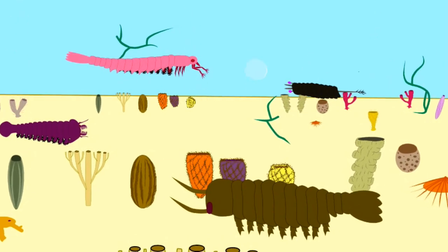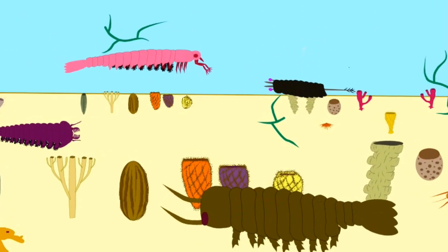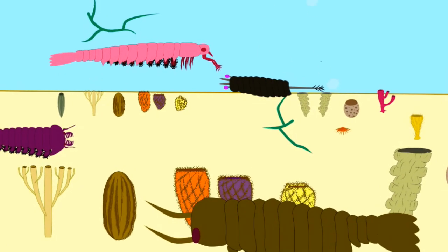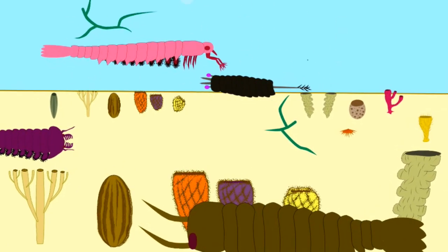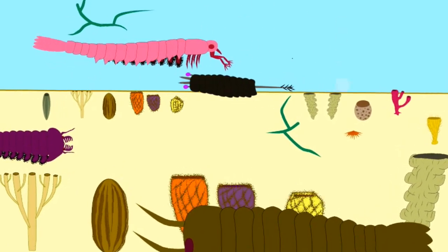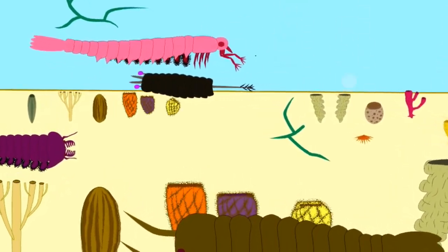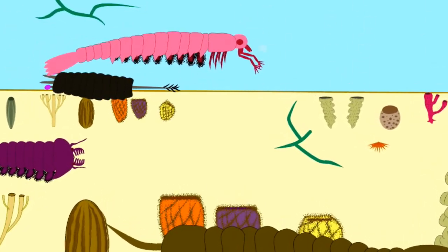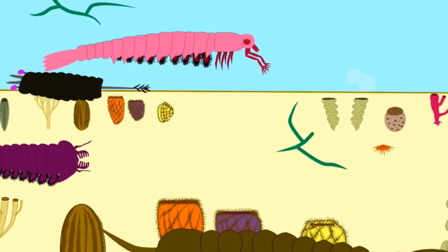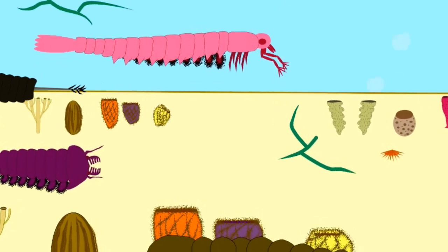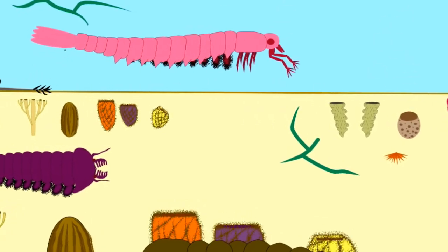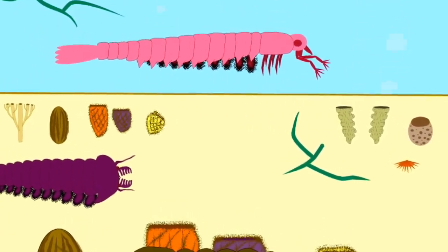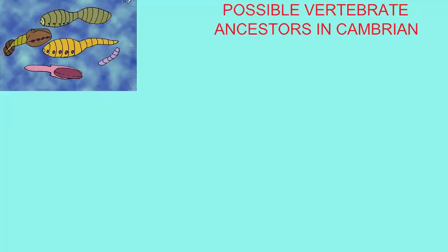The Cambrian is recognized as being divided into a number of stages. Not all of the Cambrian animals appeared at once. They evolved slowly, and there are a number of potential ancestors, or at least the relatives of the ancestors of the first vertebrates, which are known from the early Cambrian.